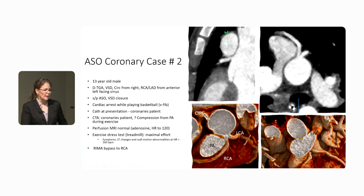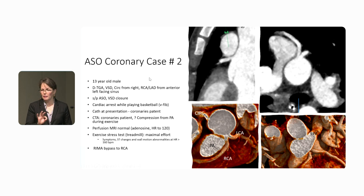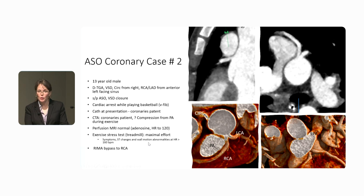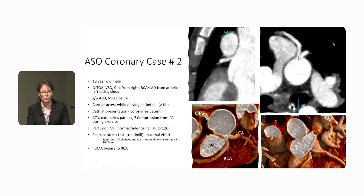This is a patient — a 13-year-old male who had transposition with coronary anomalies and had an arterial switch — doing great, no symptoms whatsoever, and then while playing basketball he had a V-fib cardiac arrest. He came to the hospital, had catheterization, and the coronaries looked great. They got a CT three days later. I thought the coronary could be compressed by the pulmonary artery with exercise. We initially considered perfusion MRI with adenosine, but took him to the adult hospital for stress testing. He had symptoms, ST changes, and wall motion abnormalities at heart rates above 160 — proximal coronary patent but compressed with exercise.